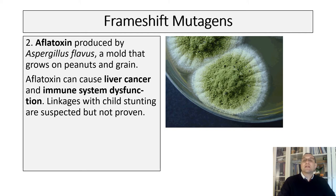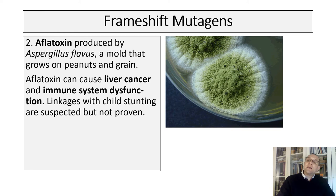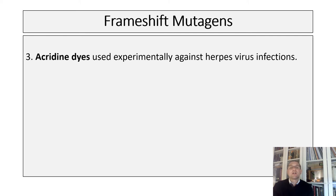Another example of a frameshift mutagen is aflatoxin, produced by Aspergillus flavus — a mold that grows on peanuts and grain. Aflatoxin can cause liver cancer and immune system dysfunction. Aflatoxin poisoning is not a major concern in the United States due to surveillance and monitoring in our food system, though recalls do occur and millions of dollars of agricultural crops are lost annually. Aflatoxin outbreaks have occurred in developing countries such as Kenya and the United Republic of Tanzania, prompting the WHO and CDC to develop working groups to tackle aflatoxin contaminated food. Another example of a frameshift mutagen is acridine dyes, used experimentally against herpes virus infections.